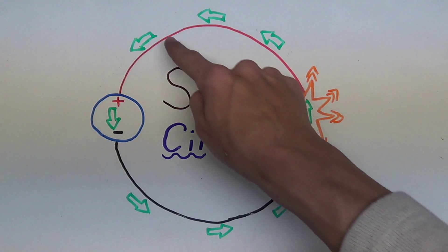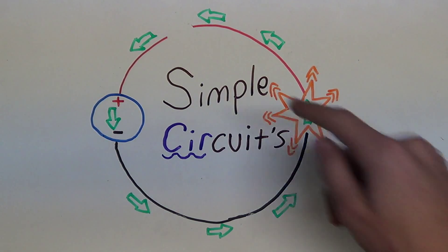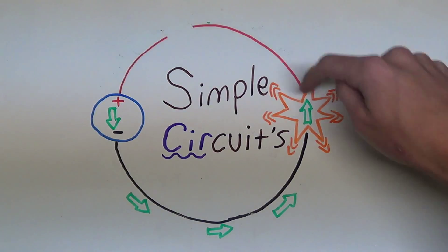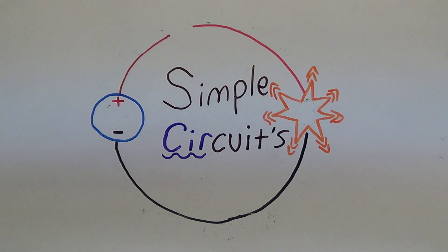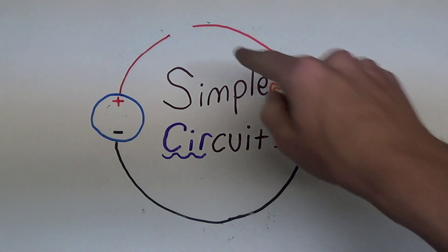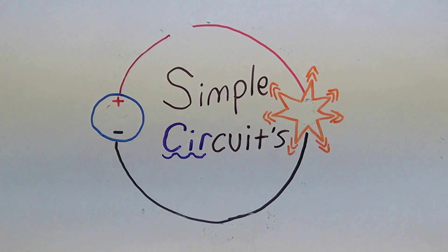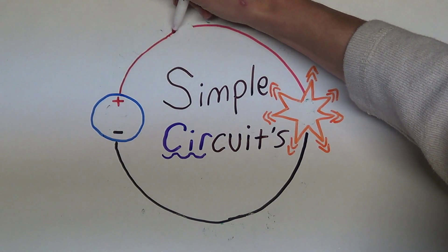If we were to open up the circuit, all the current will stop flowing. Now this circuit we would call an open circuit. You can see it has an open spot right here. Once we close the circuit again, then current will flow.